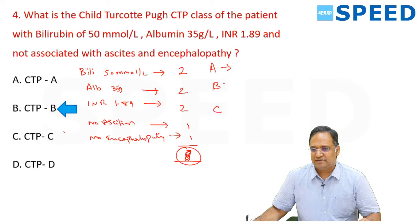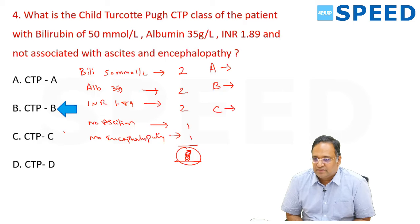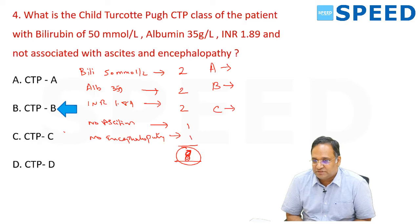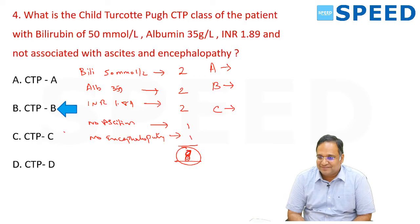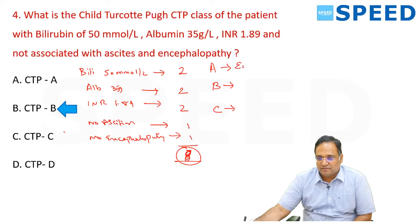For a patient with portal hypertension and massive variceal bleeding: Child A management — endoscopic intervention first; if that fails, TIPS; if that fails, shunt procedures. Child B and C — liver transplant. Few Child B patients may be managed with shunt procedures, but predominantly go for transplant.